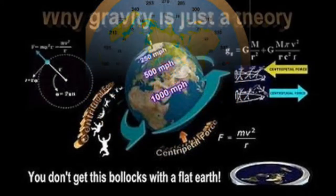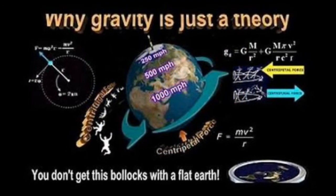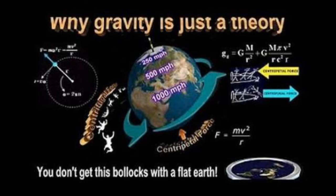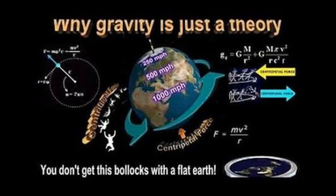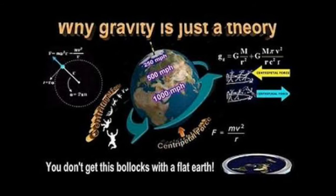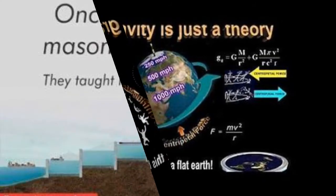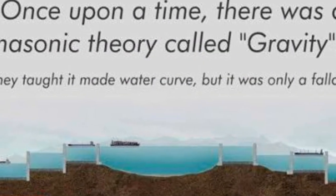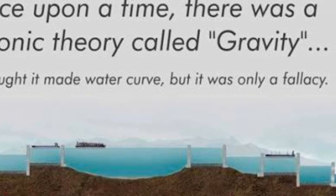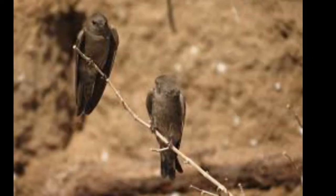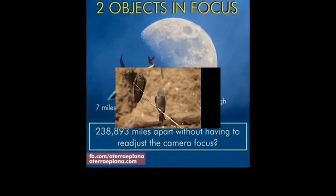Gravity is only a theory and not a scientific fact. Gravity cannot be proven. As a theory, gravity can never be proven — scientists admit this. No one has tested gravity on Jupiter. Gravity cannot be seen, heard, felt, tasted, or smelt. If gravity exists, then how do birds, bats, and insects fly? How do airplanes fly?